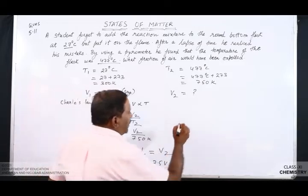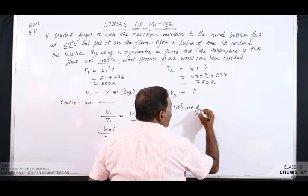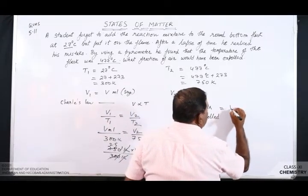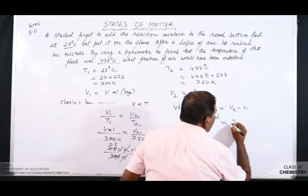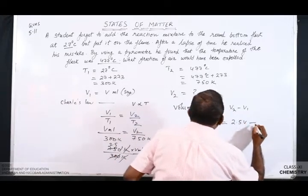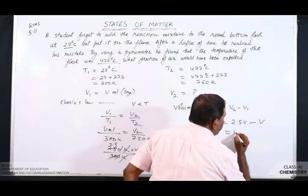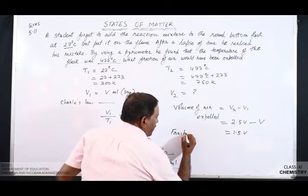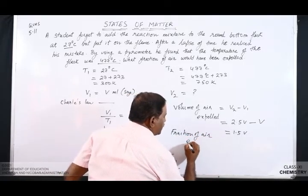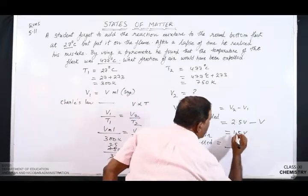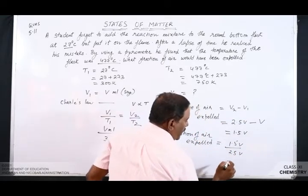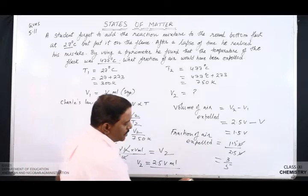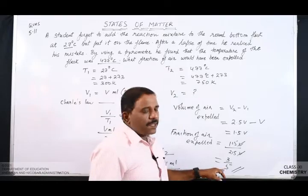Volume of air expelled = V₂ − V₁ = 2.5V − V = 1.5V. The question asks for the fraction of air expelled, which is 1.5V / 2.5V = 3/5. So the fraction of air expelled is 3/5, and this is the required answer.